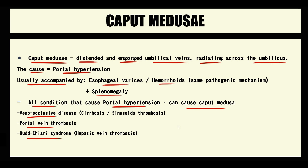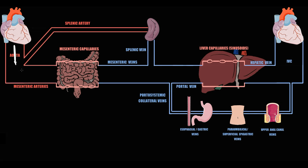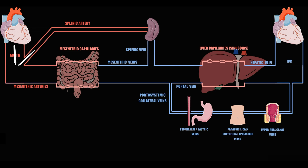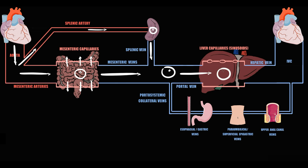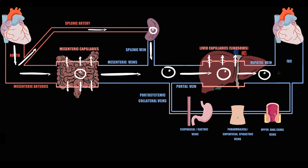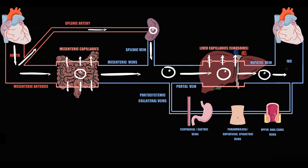To explain why Caput Medusae develops, we have to recall splanchnic circulation. Initially the left ventricle pushes blood into the aorta, and from the aorta blood goes into the splenic artery that supplies blood to the spleen, and mesenteric arteries that supply blood to the intestine, where in mesenteric capillaries fluid exchange occurs. Then blood from the spleen via the splenic vein and from the intestine via mesenteric veins is delivered to the portal vein, which drains blood into the liver where fluid exchange occurs in liver capillaries called sinusoids. After fluid exchange, blood goes to the hepatic vein and is drained into the inferior vena cava.